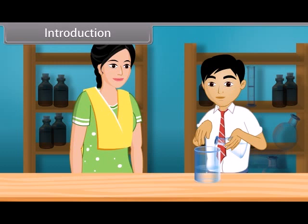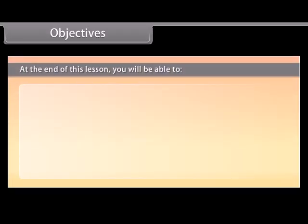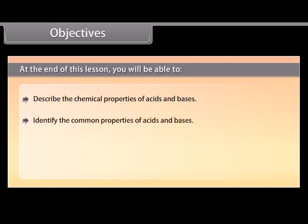Children, in this lesson we will learn about the chemical properties of acids and bases and about salts. Objectives: At the end of this lesson, you will be able to describe the chemical properties of acids and bases, identify the common properties of acids and bases, describe the strength of acids and bases, and explain salts.